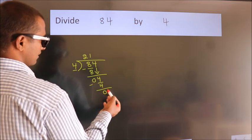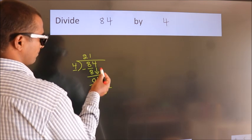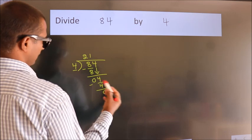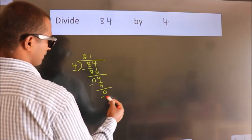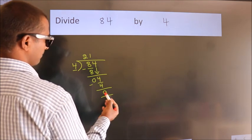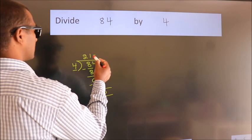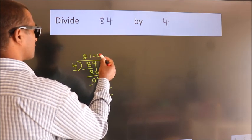After this, no more numbers to bring down. And we got remainder 0. So this is our quotient.